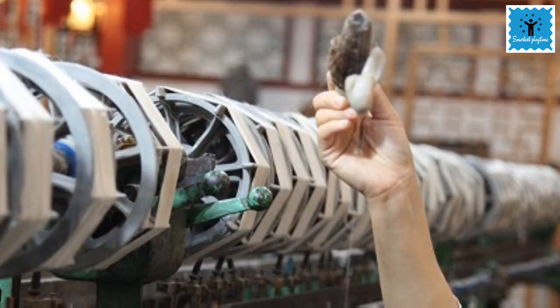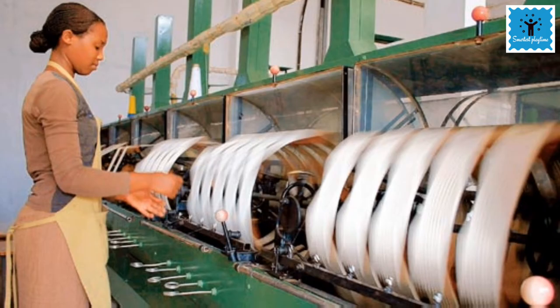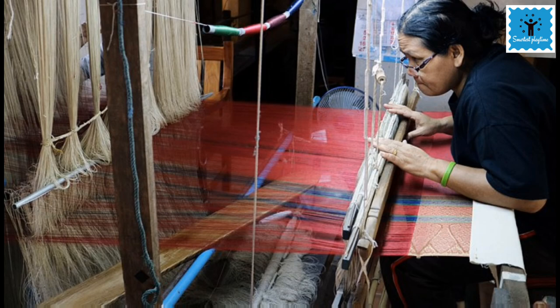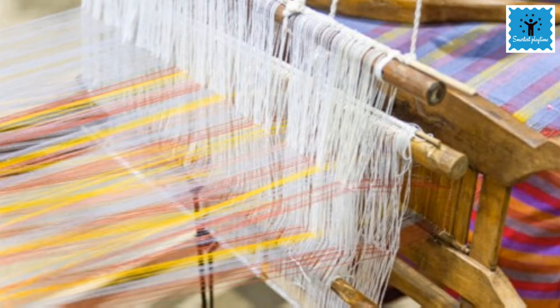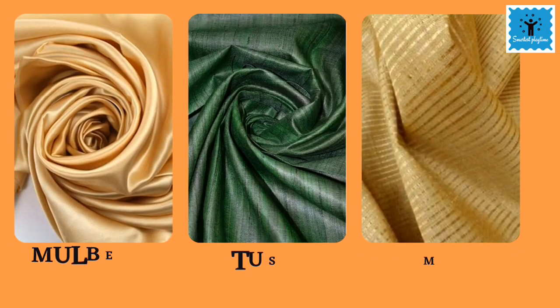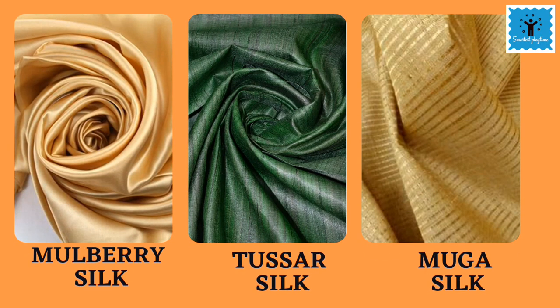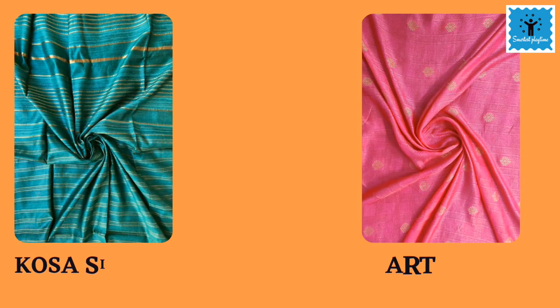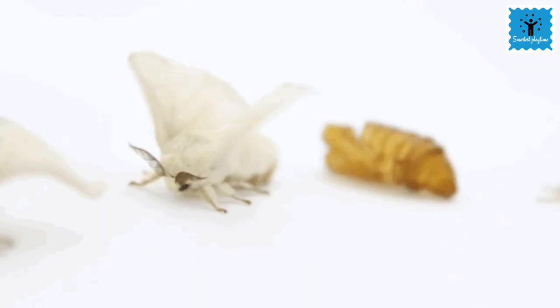The silk fiber is then spun into silk thread, which is later woven into silk cloth. There are a variety of silk moths which look different from one another, and the silk they yield is also different in texture — for example, mulberry silk, tussar silk, mooga silk, kosa silk, art silk, and so on.